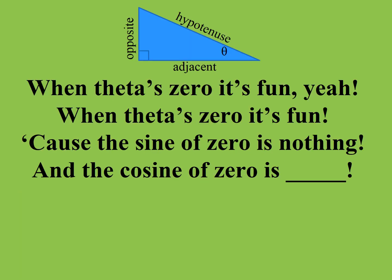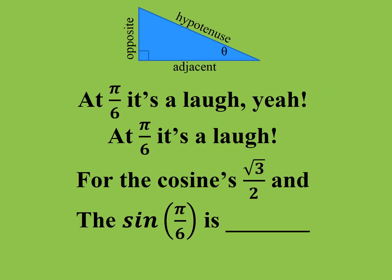When theta is zero, it's fun — cause the sine of zero is nothing, and the cosine of zero is... At pi over six, it's a laugh. The cosine is root three over two, and the sine of pi over six is...